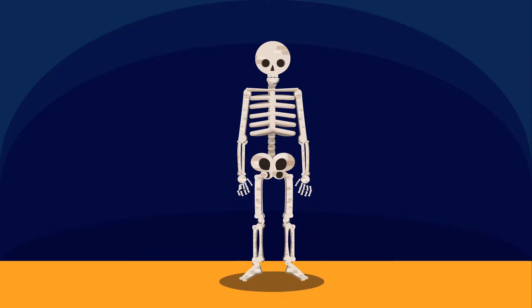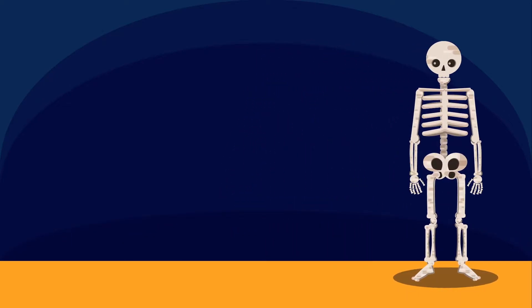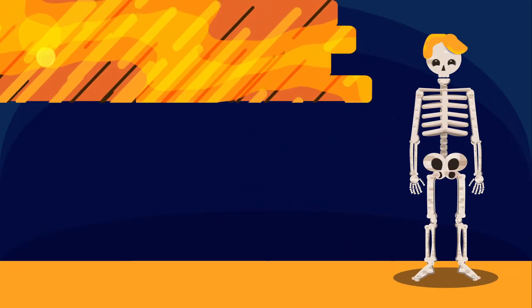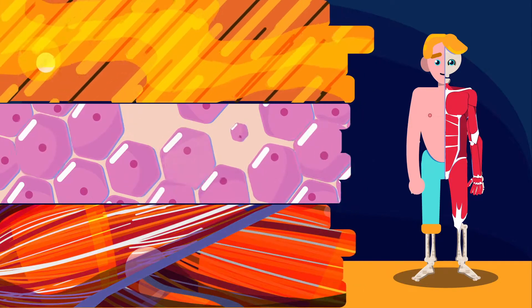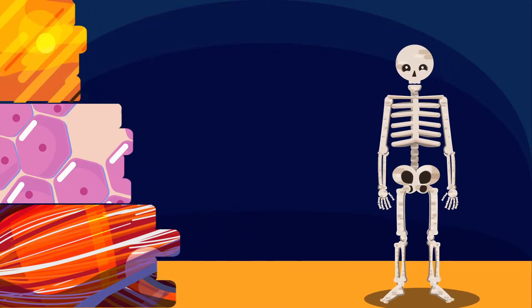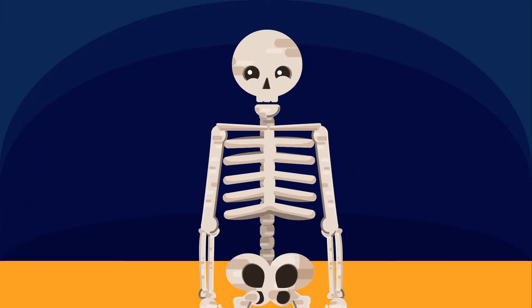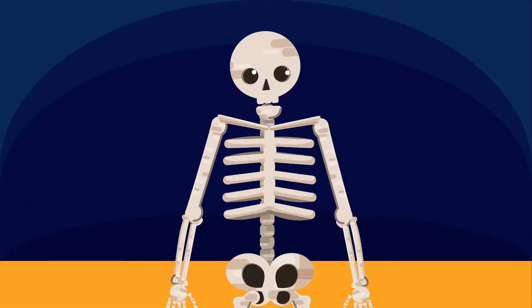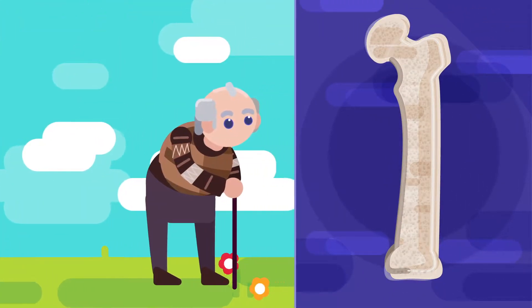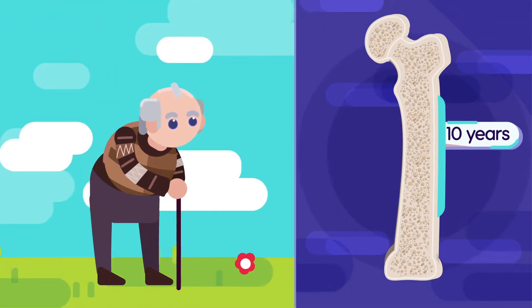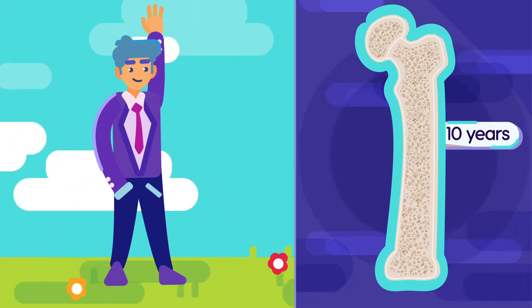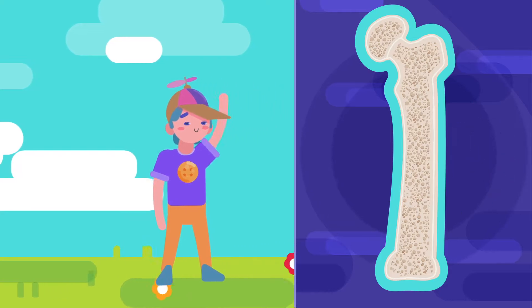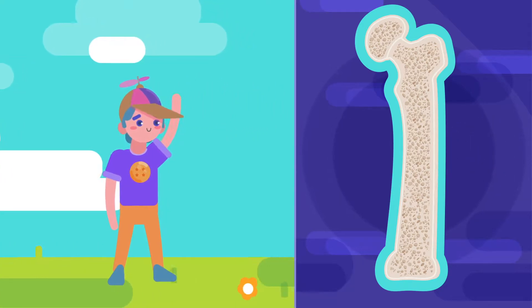Our bones appear static and unchangeable. Our hair grows, our skin is renewed, our muscles change their tone — but our bones are supremely dynamic, much more than you might think. The compact bone in our body is completely renewed every 10 years. That's right: if you are 28 years old, your skeleton is completely different from when you were 18.